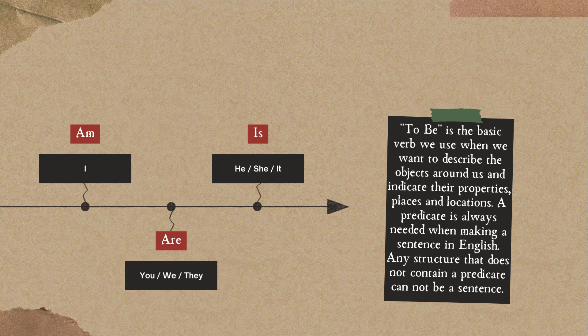To be is the basic verb we use when we want to describe the objects around us and indicate their properties, places, and locations.